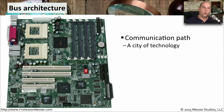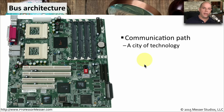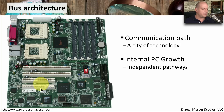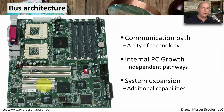If we look at a motherboard here from above, you can see it's like a little city. There are all these different components on the motherboard, and all of these components need to be able to communicate with each other. That's why internally on the motherboard, there are a number of what we call buses — communication paths that go between all of these different components. There are also expansion slots on the motherboard, which give us a way to communicate back to the CPU, memory, and other components.